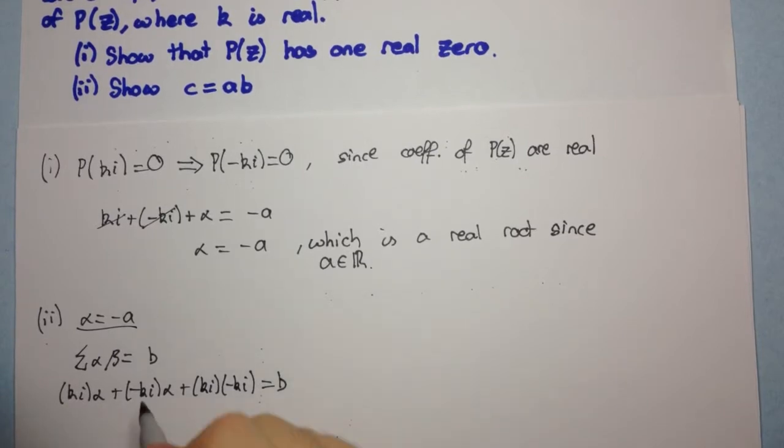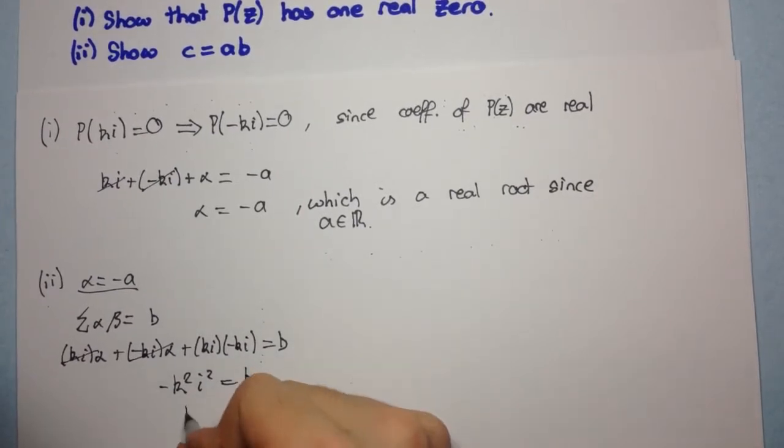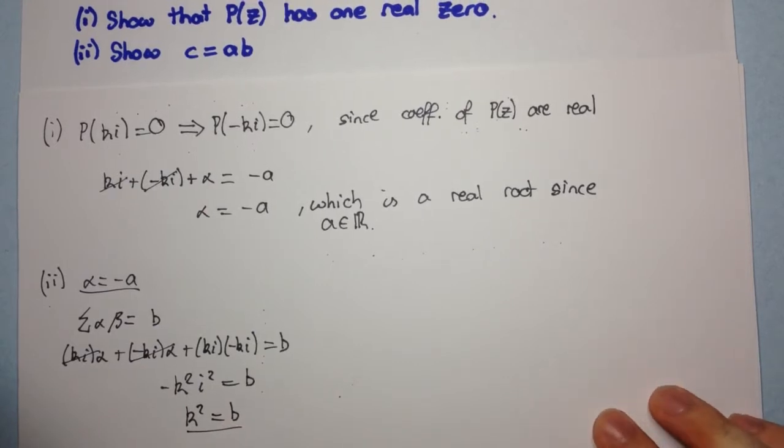Now, these two will cancel, and we're left with K squared, I squared, with a minus, that's equal to B. And, of course, I squared is minus one, and so we're left with K squared equals to B. I'll underline that so we can see it more clearly.